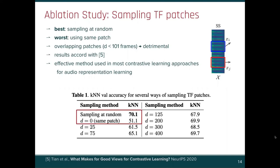We also see that overlapping patches — which happens when the distance is less than 100 frames — is detrimental. All these results accord with previous work on visual contrastive learning.